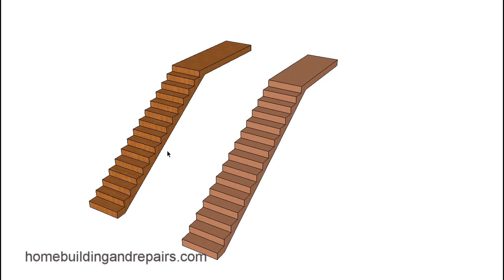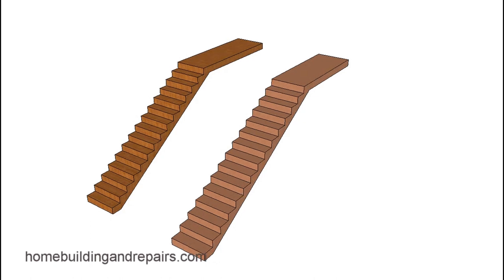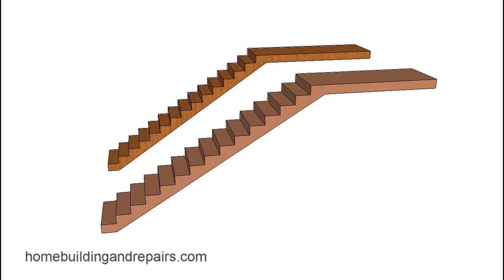What we have here are two different stairs the same height with seven inch risers on each stairway. This one has a 10 inch tread and this one has an 11 inch tread. We can see that the stairway is a little longer. This stairway would be 14 inches longer on a horizontal plane if it has 14 treads.